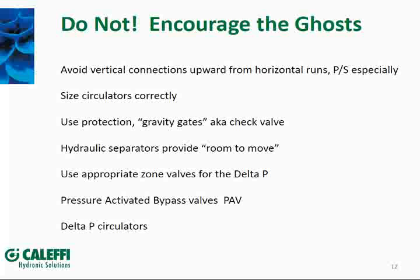There are different types of zone valves with different shutoff pressures. If you have a pump developing high delta P, you must select a zone valve that can shut off against that pressure. For a commercial building with a pump developing 30–40 pounds delta P, a zone valve rated at only 20 pounds shutoff will have bleed-through. We offer zone valves that can shut off against 75 pounds pressure — select the right valve for the application.